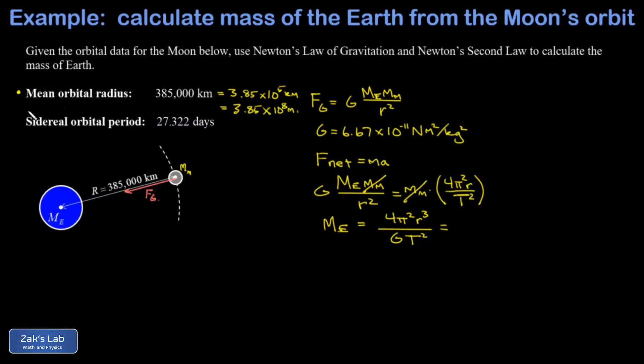And then I have to do a little calculation on the sidereal orbital period. I have 27.322 days, and we need to get to SI units here, which means I need seconds. And there's 24 hours in a day and there's 3600 seconds in an hour, and this gives me 2.361 × 10⁶ seconds.